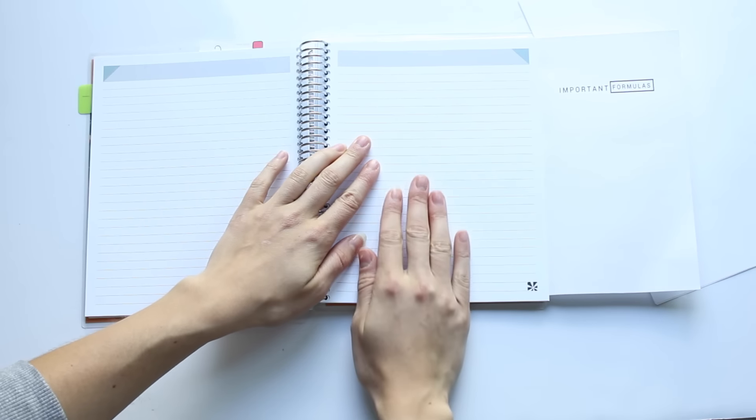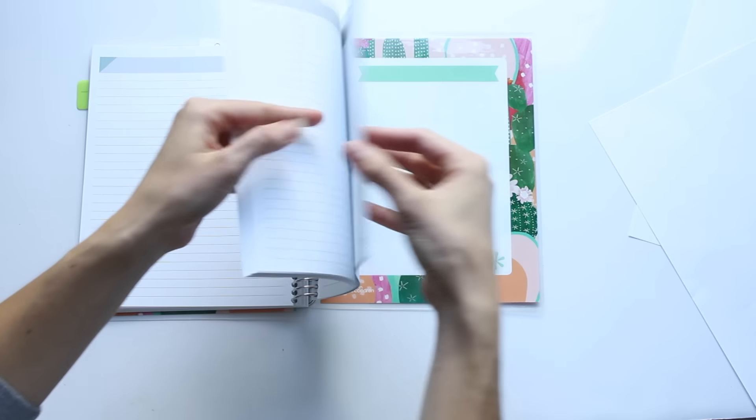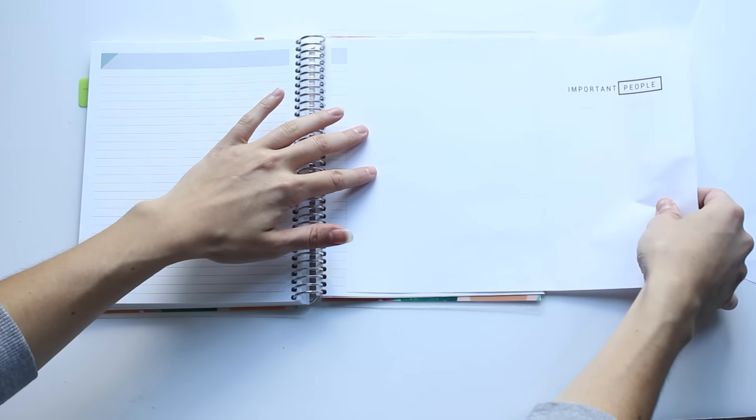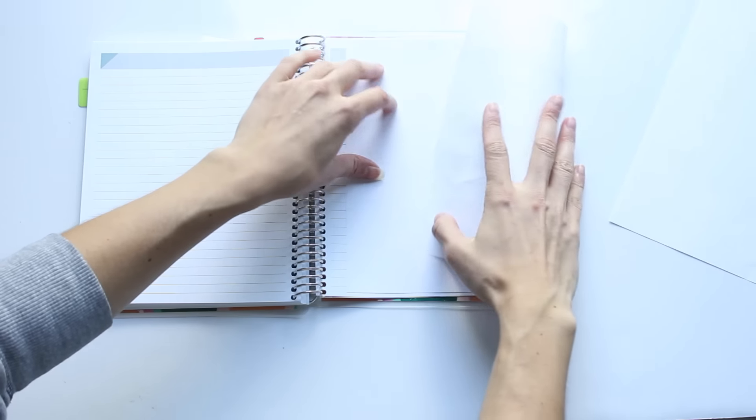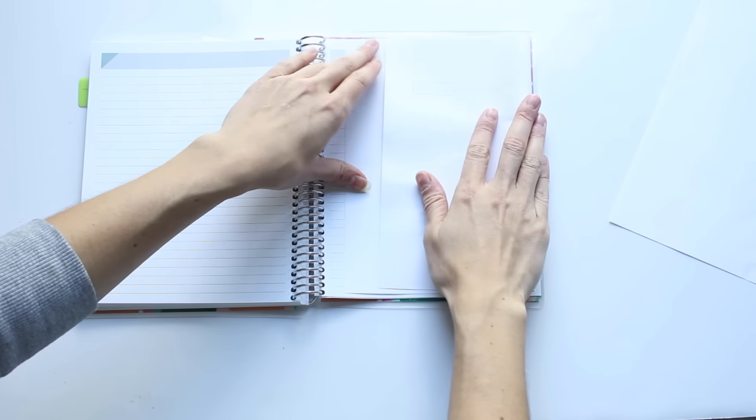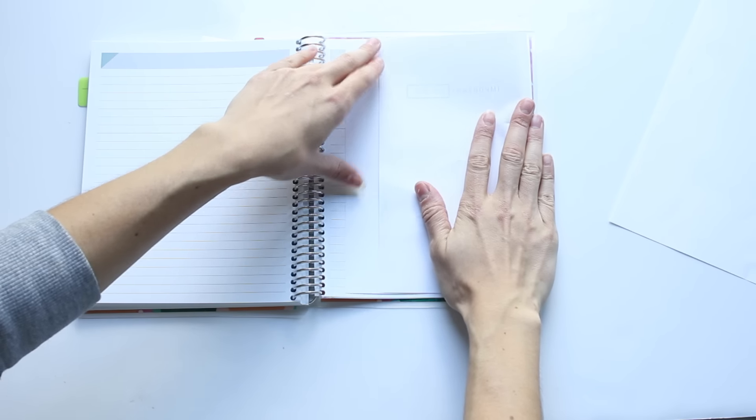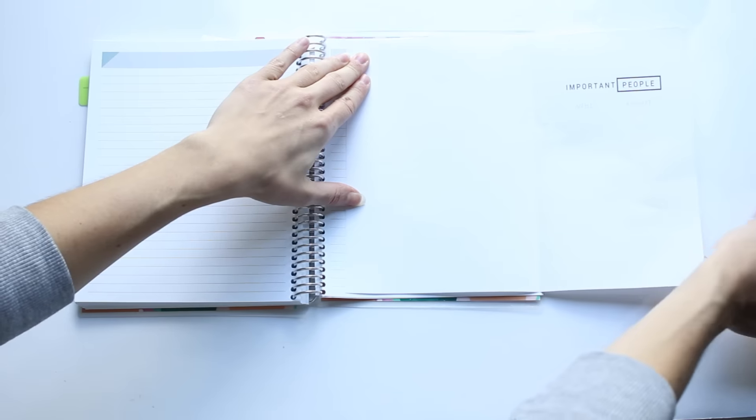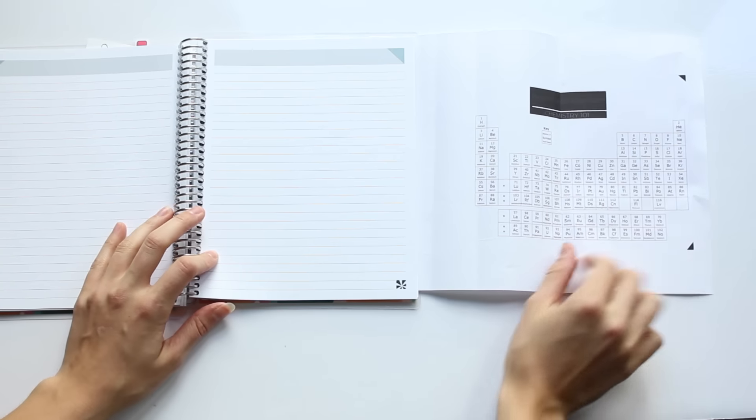These are also really great for history classes or literature classes when you need to remember certain people. So there is one for important historical figures. These fold-out pages make great tracker pages as well if you wanted to track down the chapters that you've read in a book to track your reading assignments. Just make sure that when you print them out, they are sized for the notebook that you chose.